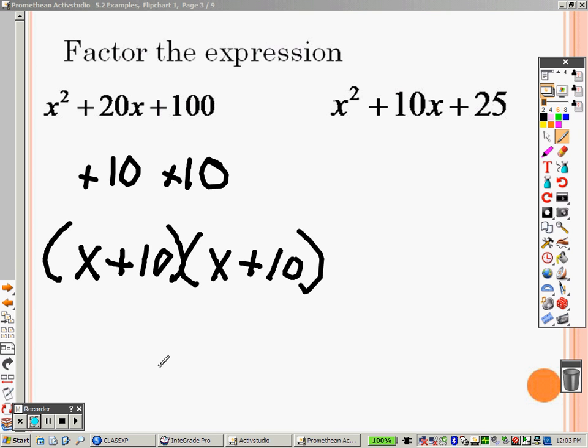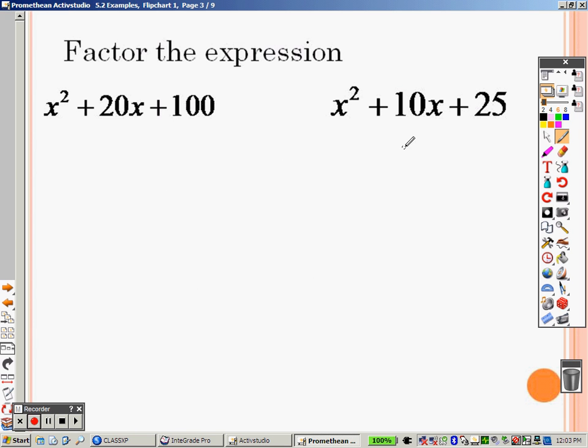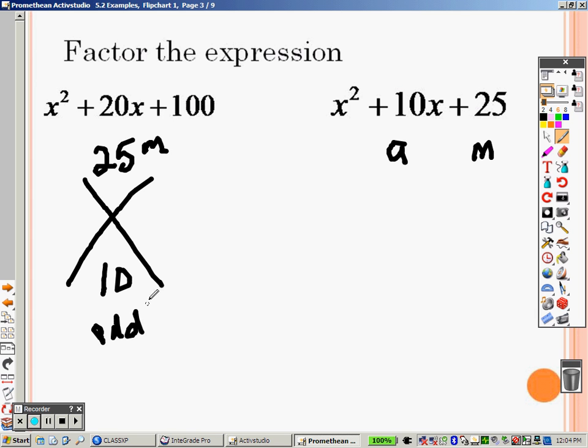So taking a look at the next one, we're looking for two numbers that multiply to give you 25 that add to give you 10. So sometimes you'll see teachers write them like this. How many multiply to give you 25 that add to give you 10? Well, multiples of 25: you have 1 and 25 and 5 and 5. That's it.